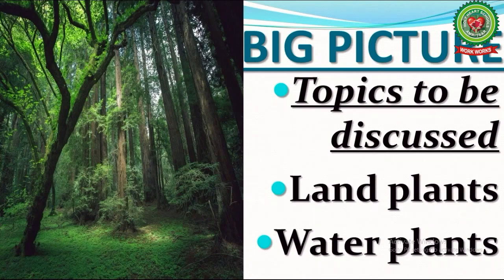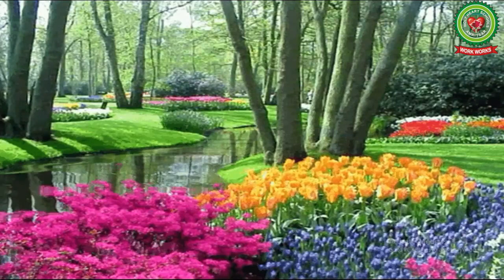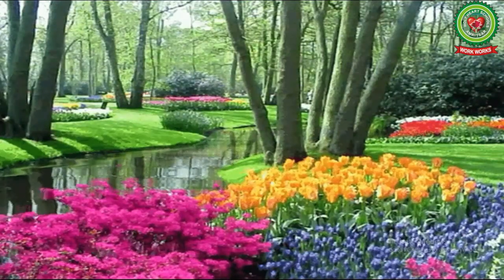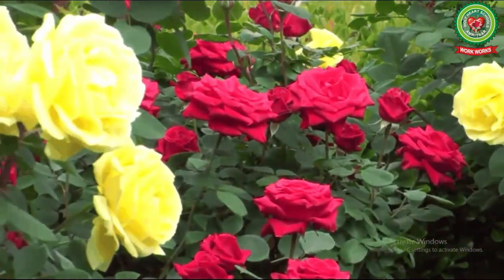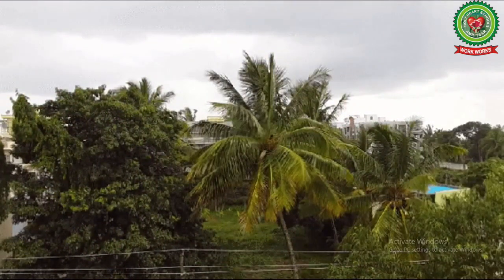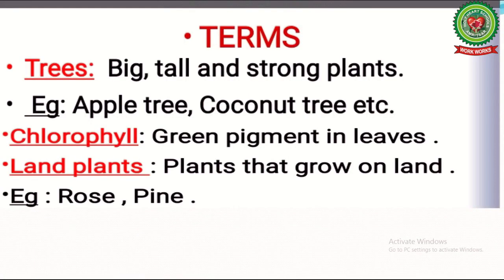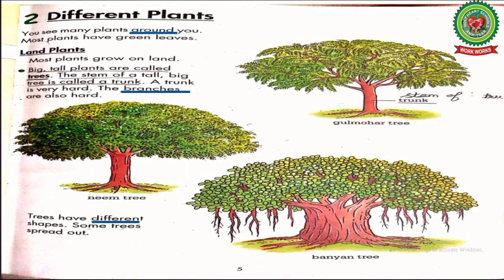Now children, let's have a look at a garden. You see many types of plants in a garden — some plants are small and some plants are big. All the plants are different in color and size. Let us discuss some important terms of this chapter. Number one: trees — big, tall and strong plants, for example apple tree, coconut tree. Number two: chlorophyll — green pigment in leaves. Number three: land plants — plants that grow on land, for example rose and pine.